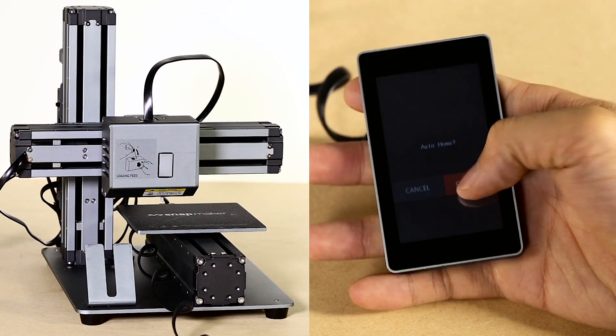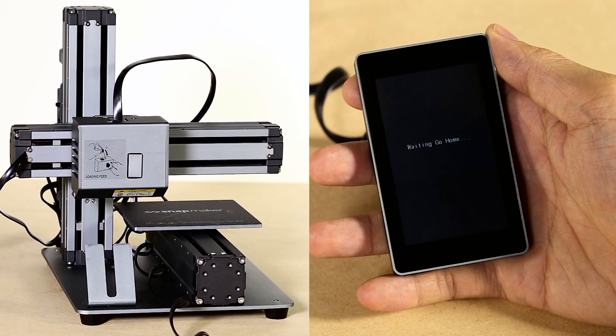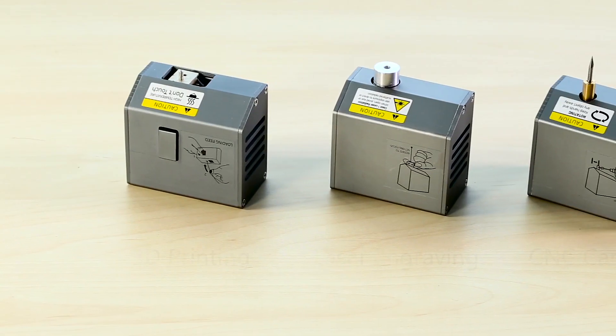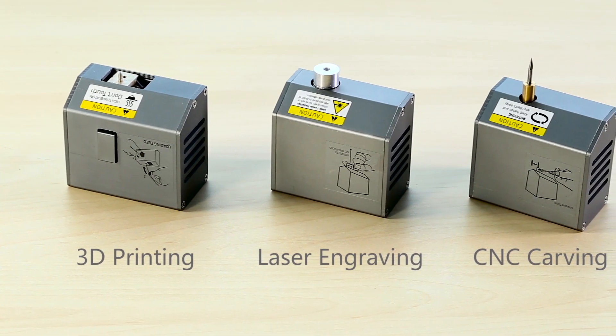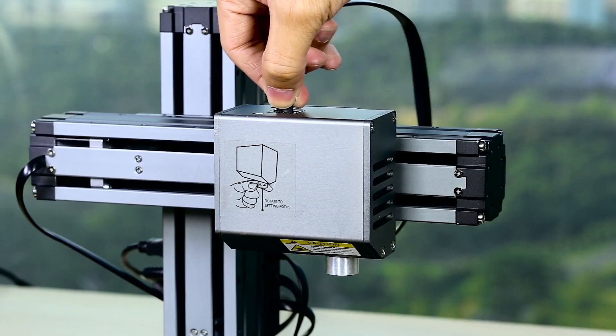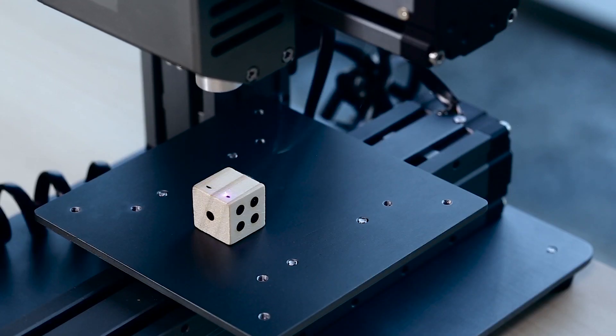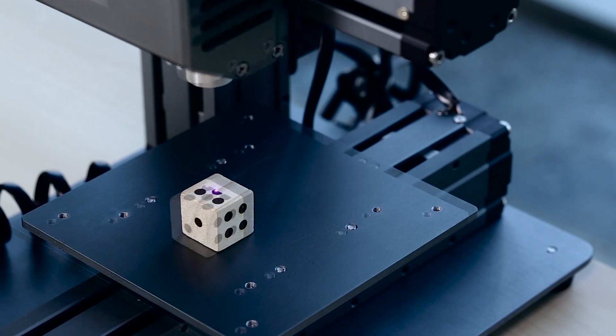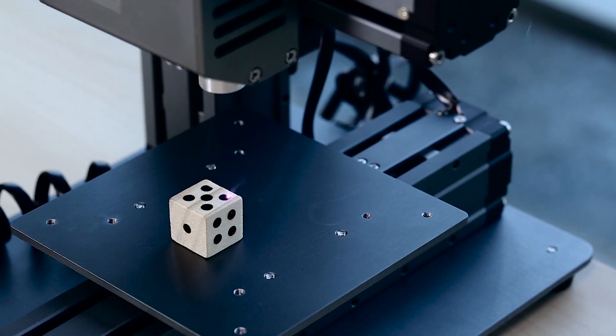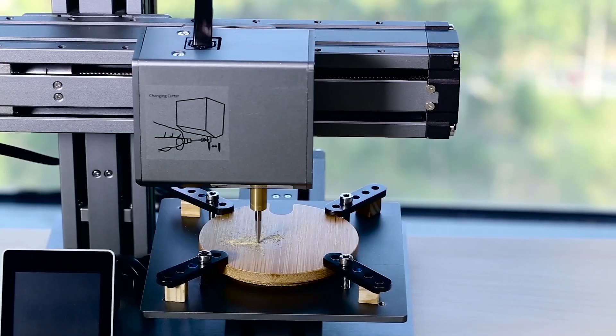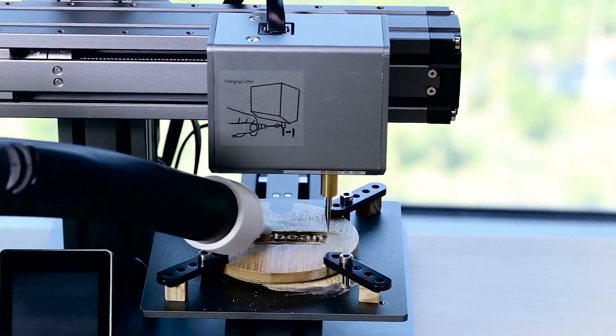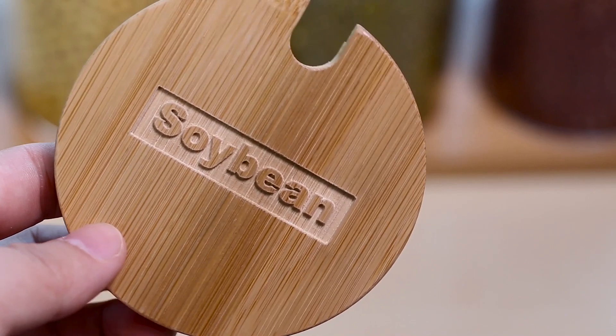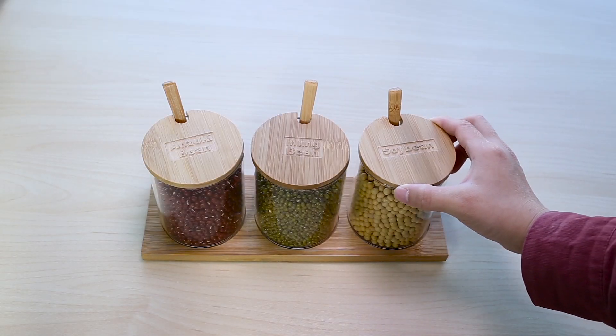The Snapmaker also features expanded options of laser engraving and CNC carving. With interchangeable heads, Snapmaker can be easily transformed into a laser engraver that sparks your creativity and CNC carving machine that lets your imaginations run wild. Snapmaker is versatile, inspiring you to create in more ways.